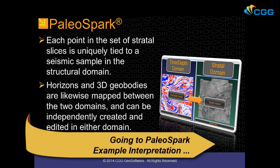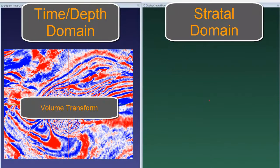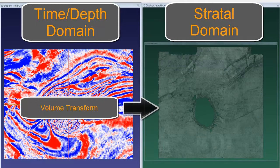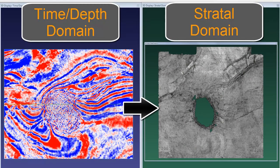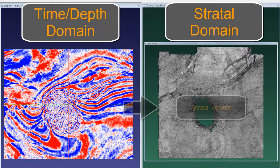Let's go live to PaleoSpark for an example interpretation. The interpreter can use PaleoSpark's patented technology to perform a volume transform that removes structure from the volume, creating a straddle volume where paleo-depositional surfaces are imaged and viewed in the straddle domain.